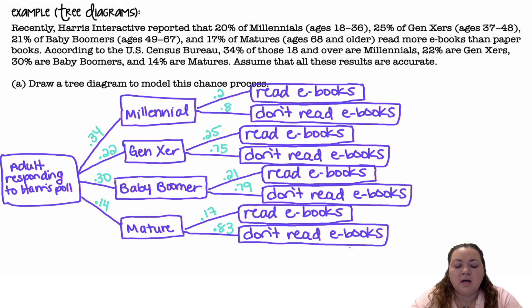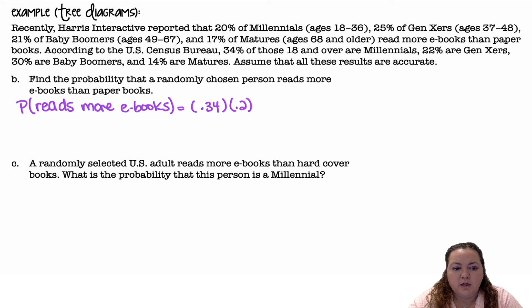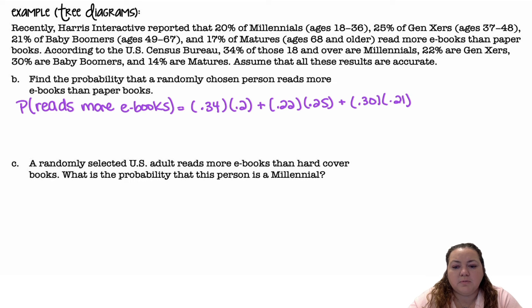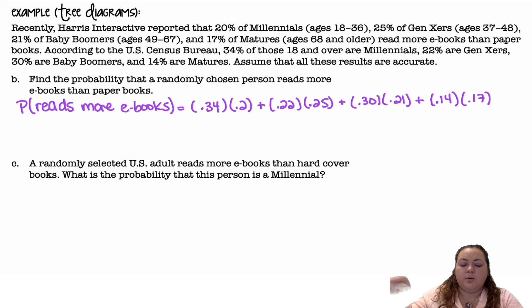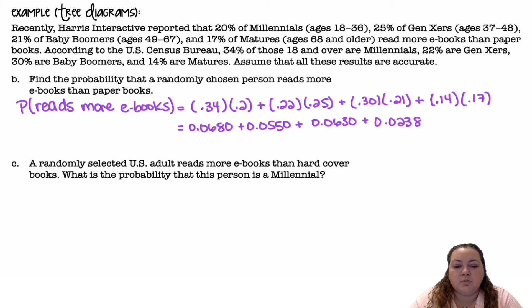If I wanted to calculate a specific probability, I would multiply across the branch. Find the probability that a randomly chosen person reads more e-books than paper books. I'm going to do all of the probability they read more e-books for each group: 0.34 times 0.2, plus 0.22 times 0.25, plus 0.30 times 0.21, plus 0.14 times 0.17 — multiplying across the branch for Millennial, Gen X, Baby Boomer, and Mature read e-books. That gives 0.0680 plus 0.0550 plus 0.0630 plus 0.0238, which comes together to be 0.2098, so about 21%.